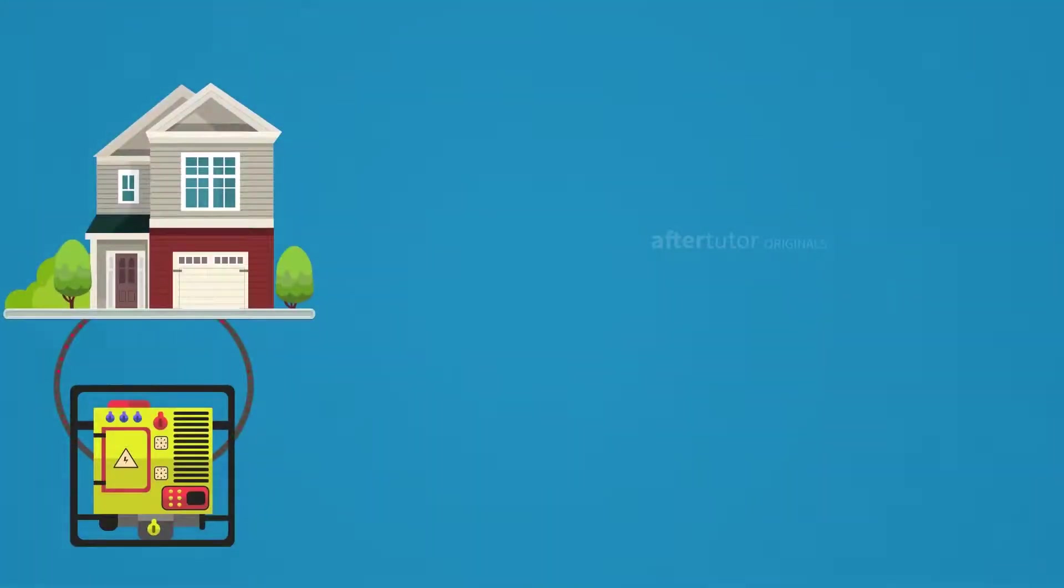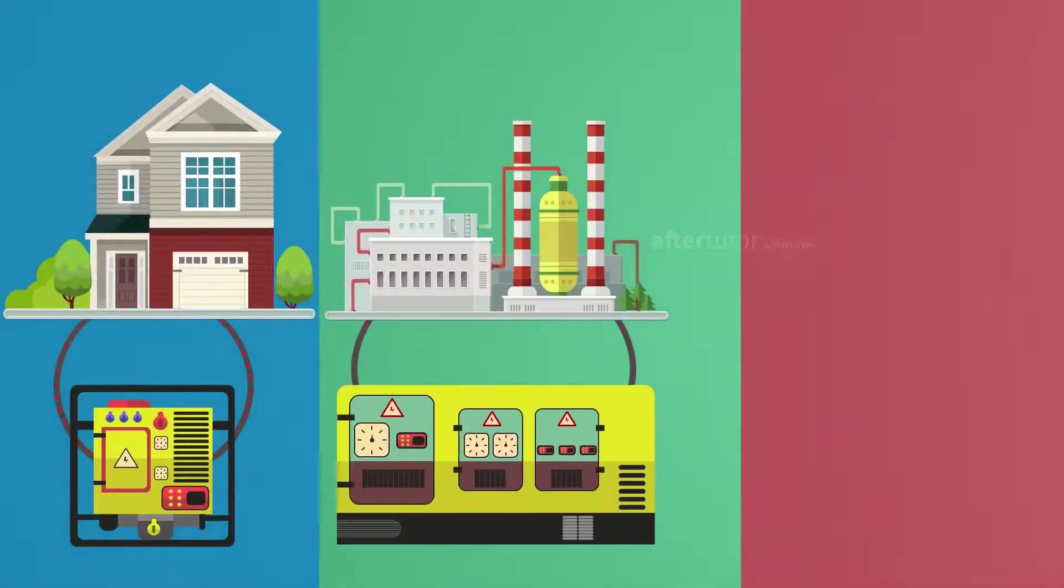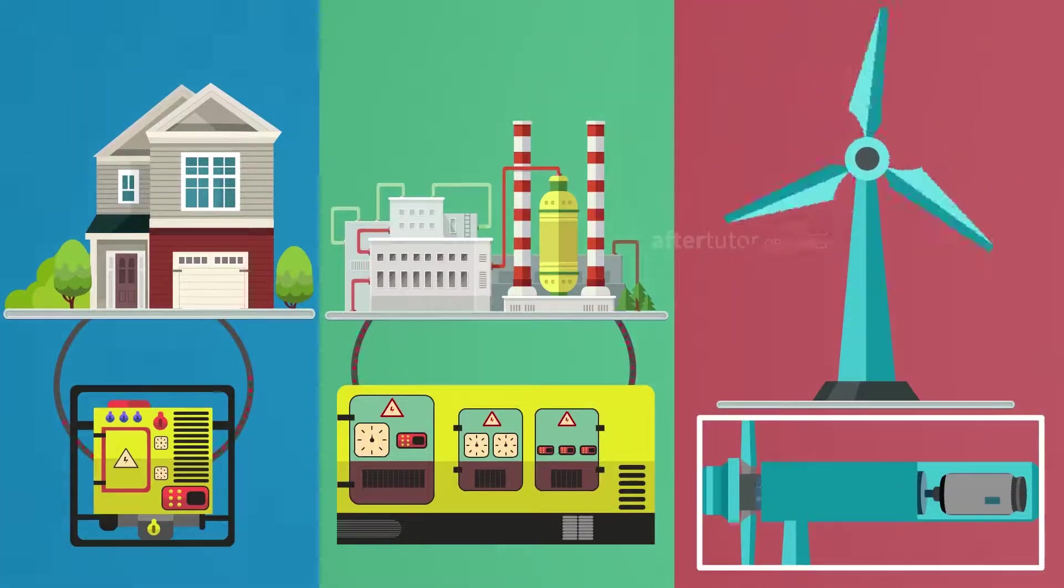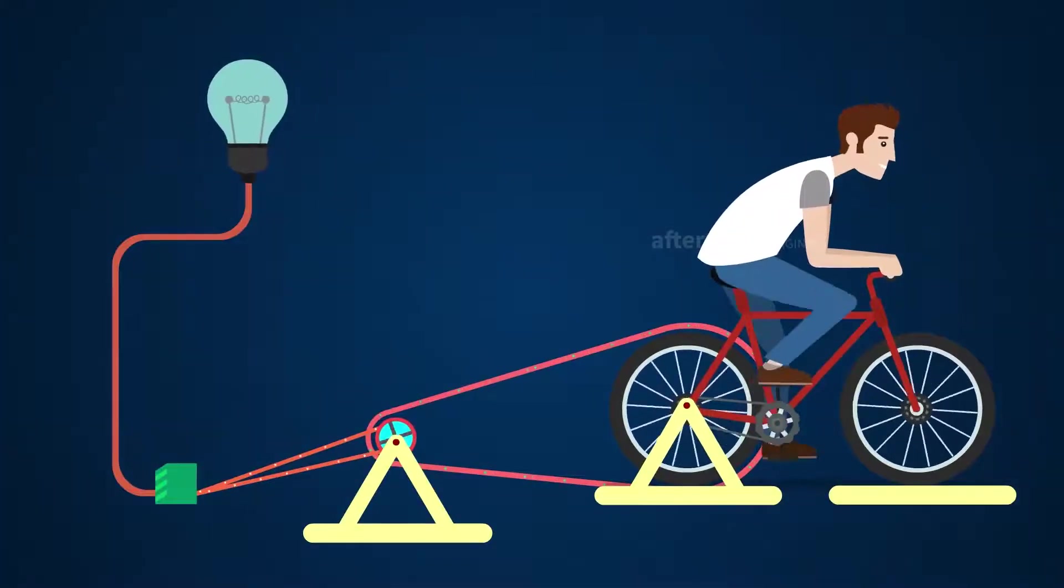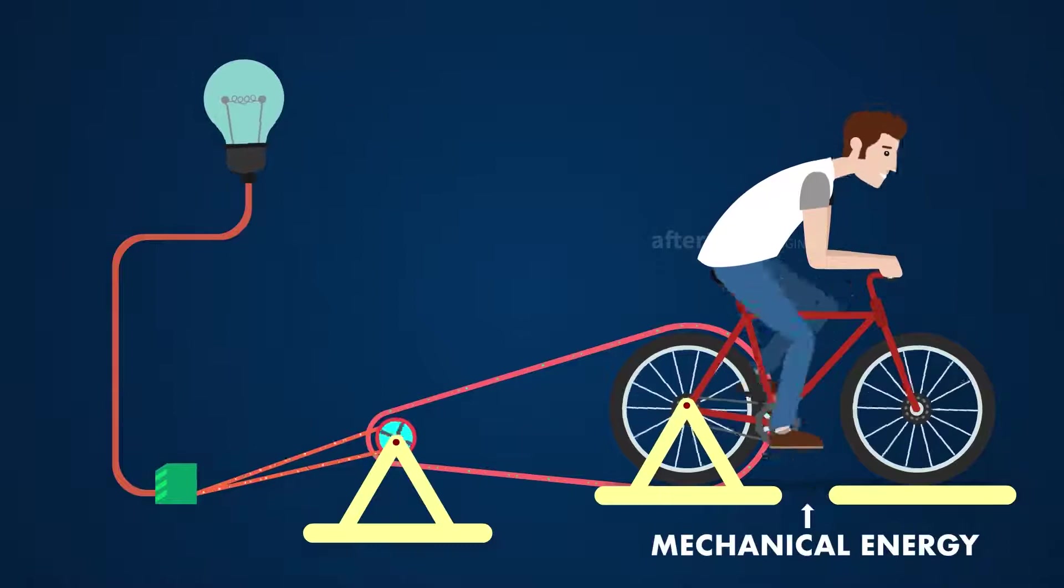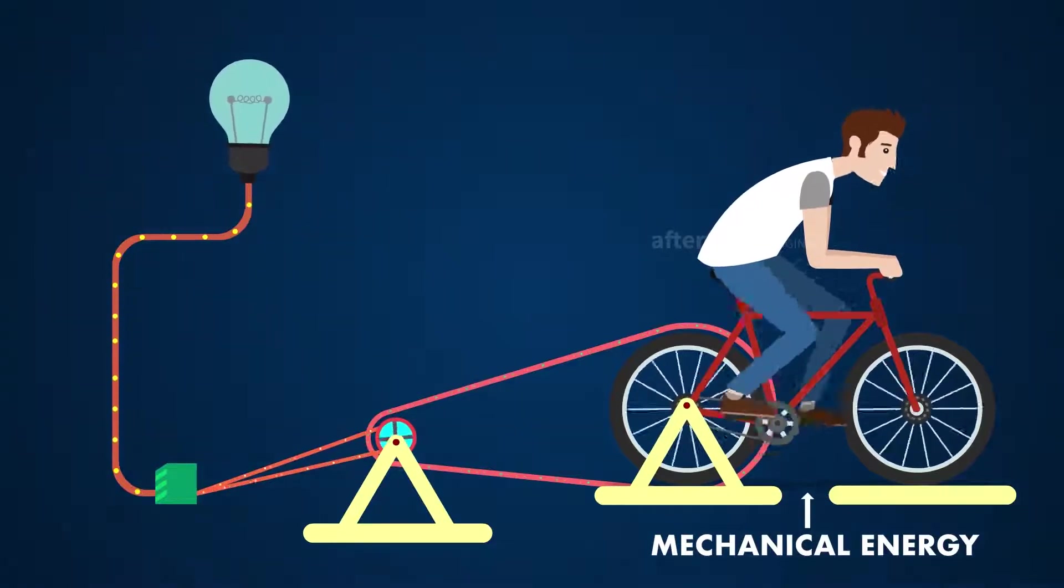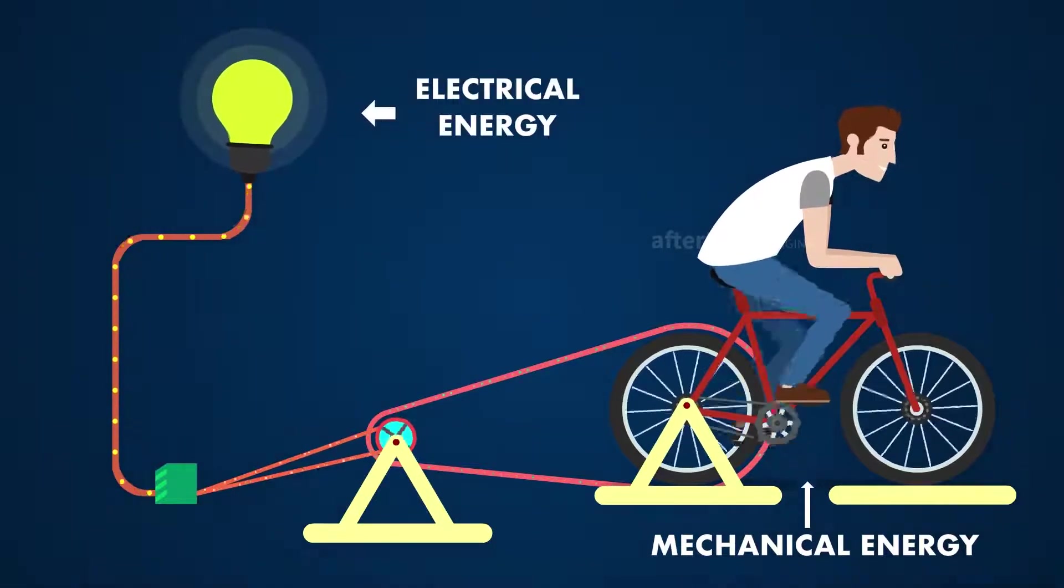Commonly, generators can be seen in our homes, industries, and many other places. An electric generator is a device that converts mechanical energy obtained from an external source into electrical energy as the output.